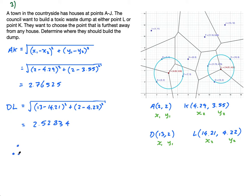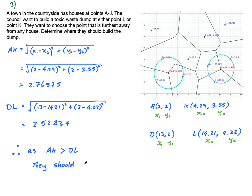Therefore, since AK (2.76525) is bigger than DL (2.52834), they should build the dump at point K, as it is furthest away from any house.